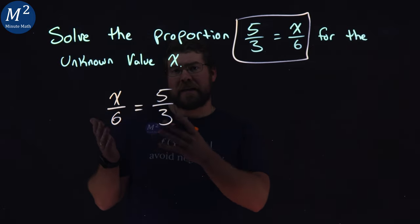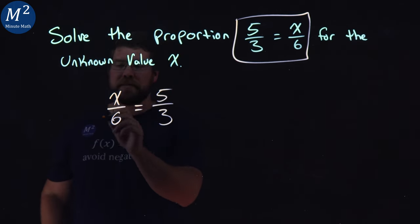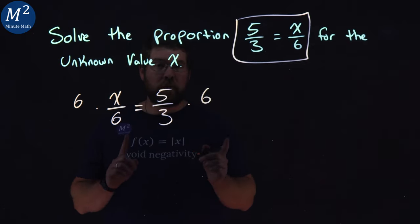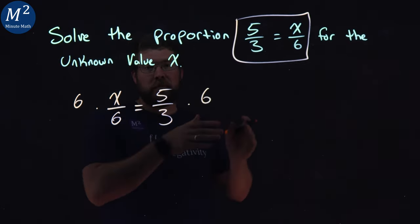From here, we want to get x by itself. So all we have to do is get rid of the 6 in this denominator. One step here, multiply both sides by 6. When you multiply one value of one side of the equation, it has to go to the other.